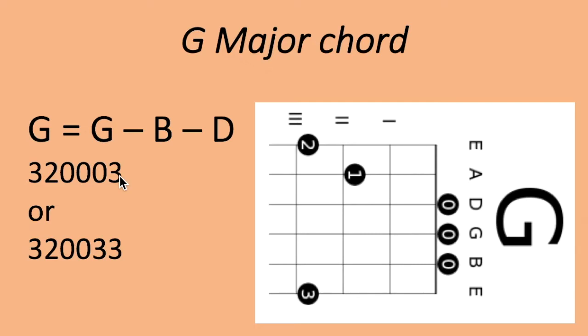So G chord has two variations with notes G-B-D, which makes this very easy. There are two variations. I personally use the second one: 3-2-0-0-3-3. You can see the practicals for this.